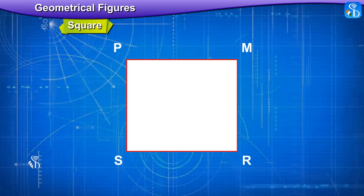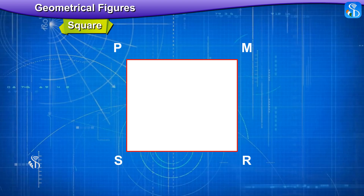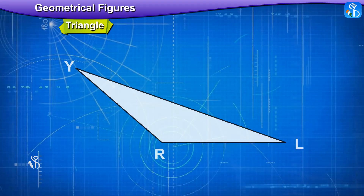Students, always remember: all sides of a square are of equal length and all the angles are right angles. The sides are MP, PS, SR, and RM. Angles PMR, MRS, RSP, and SPM are all right angles.